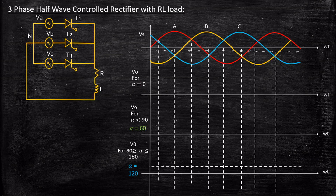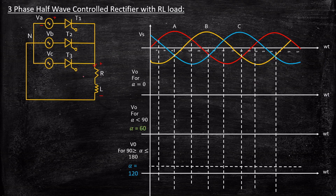When alpha equals zero, at that point phase A is becoming more positive compared to phase B and phase C. VA is positive, so the anode is connected to positive and cathode to negative of thyristor T1. A gate pulse is supplied at alpha equal to zero, so T1 is forward biased and acts as a short circuit. Consequently, whatever voltage VA supplies will appear across the load terminals, so Vout equals VA and the output voltage waveform exactly follows VA. This continues for 120 degrees.